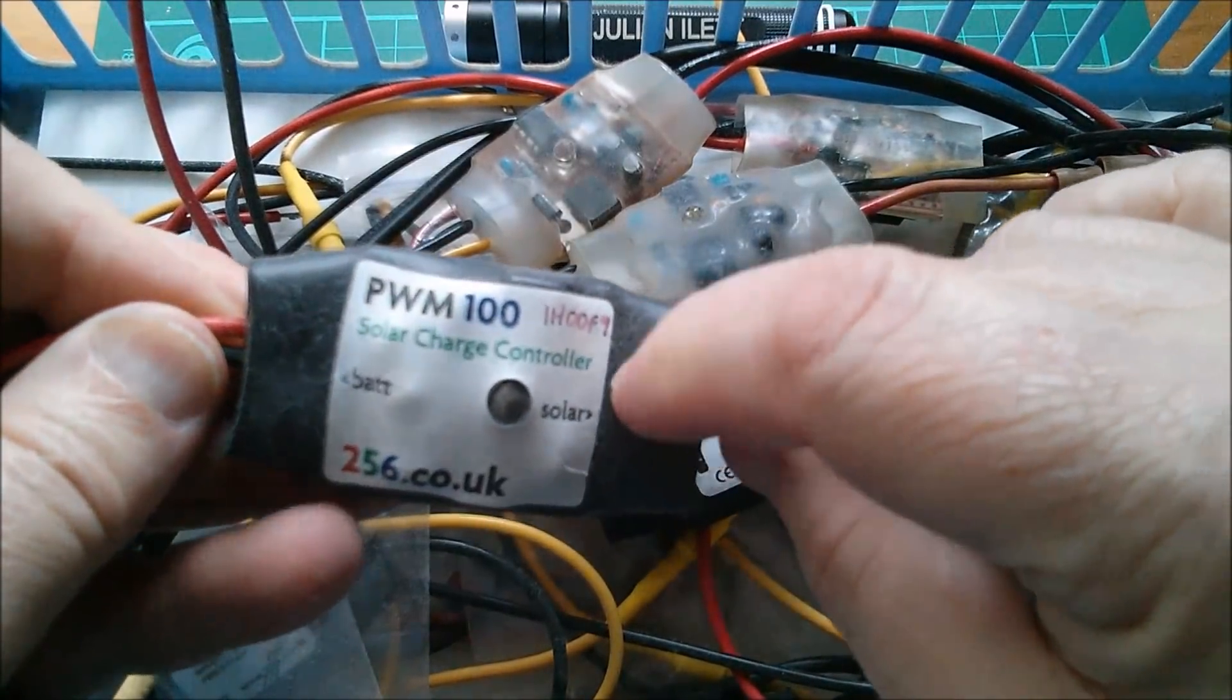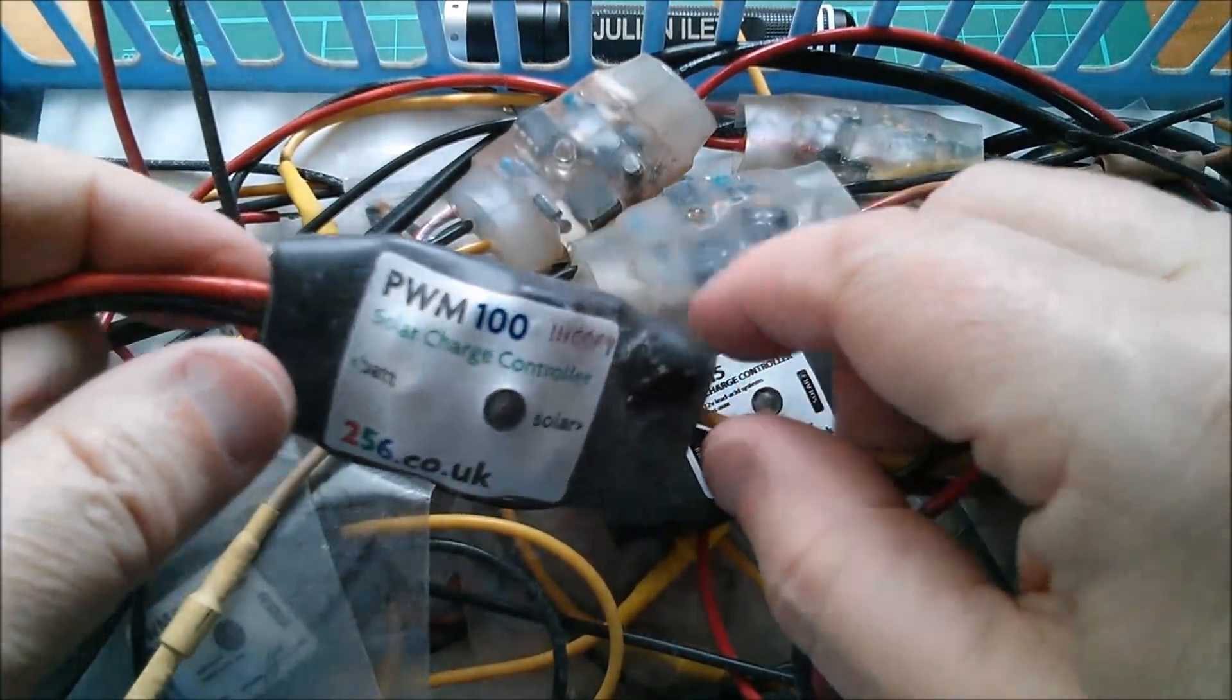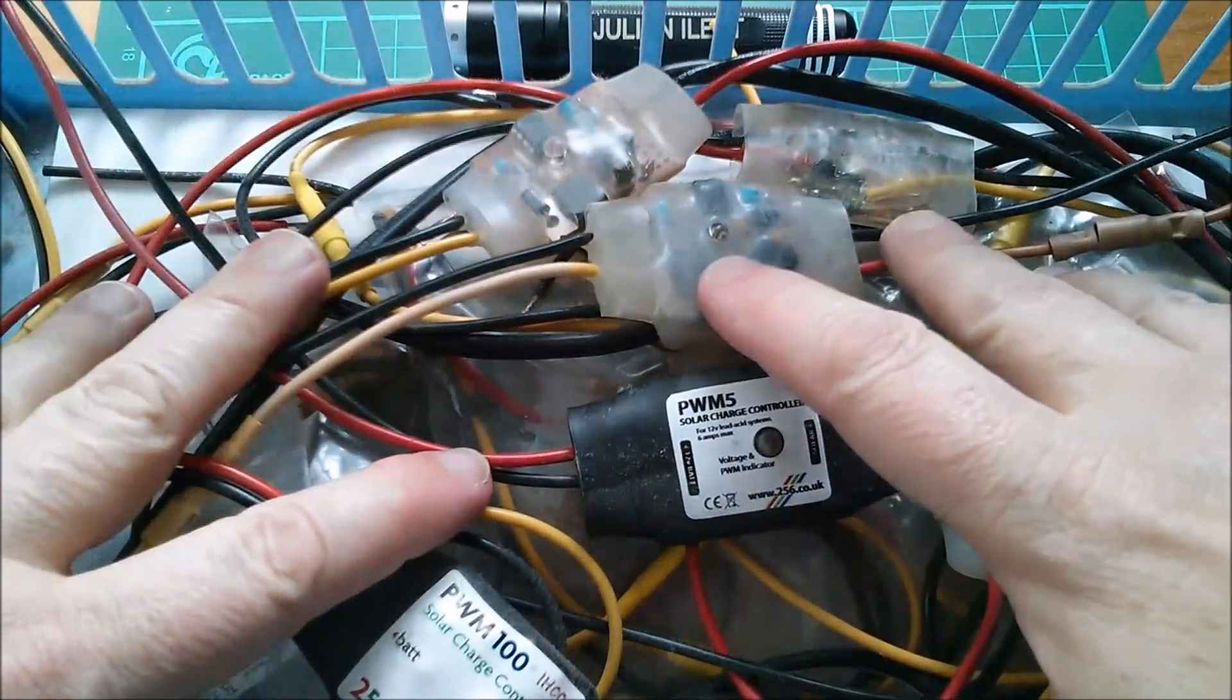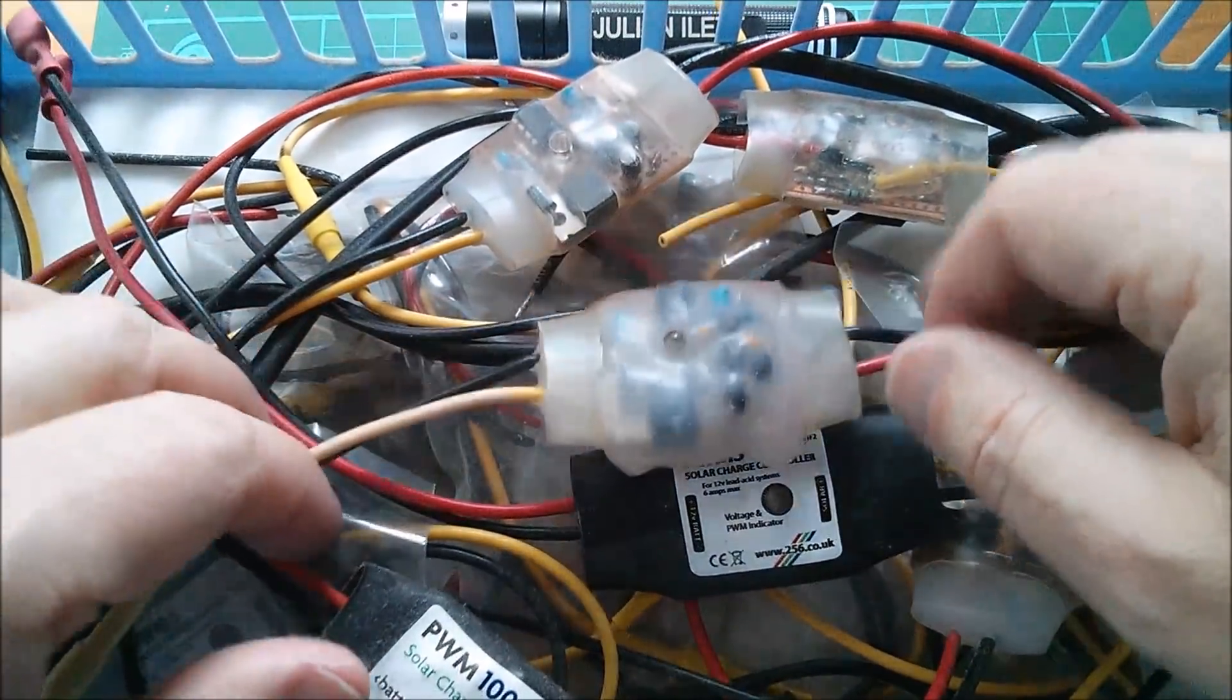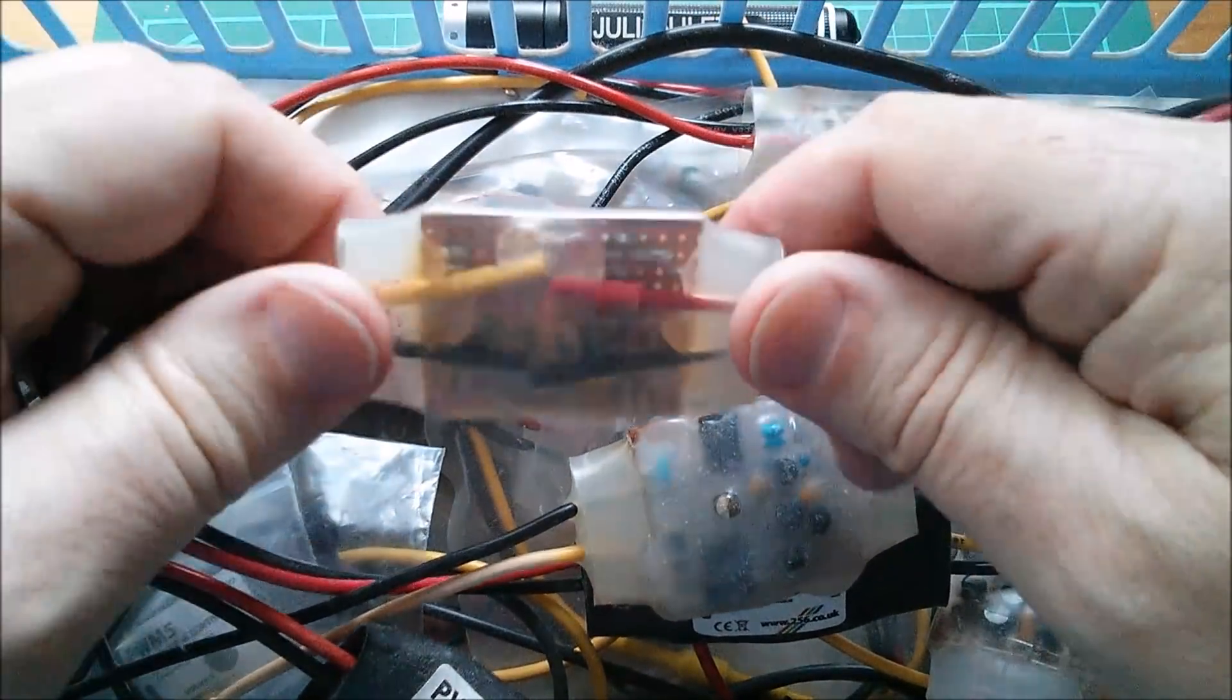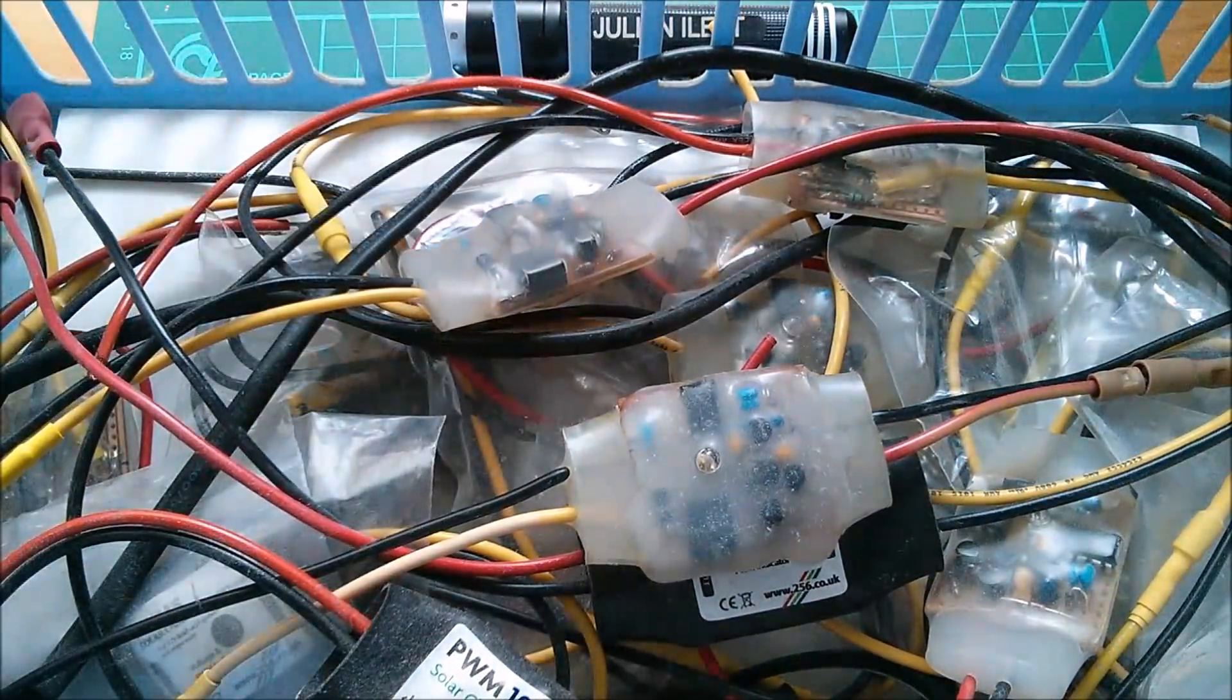There's a very early prototype with early firmware and I think early hardware that might even have used a Zener diode which was hopelessly unreliable. So I want to rework this project so that it's all surface mount because this original design was pretty much all through hole. I think I used one or two surface mount components, let's take another look at that.